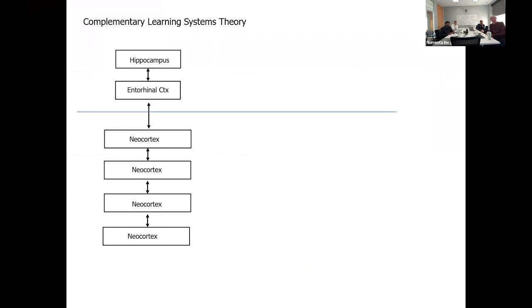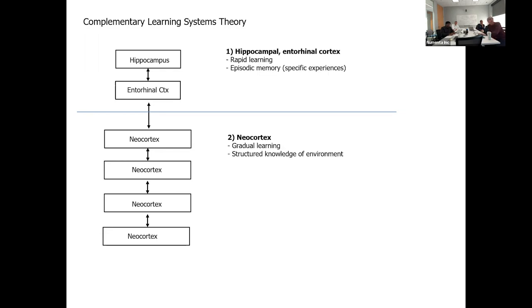This is basically an explanation of what this paper is about, what this theory is about. They're calling this complementary learning systems theory — it's a really old idea, going back way before 1995, to the early 80s. It didn't have a name before. So this is a real synopsis of what this idea is.